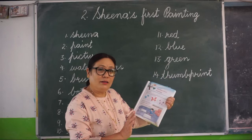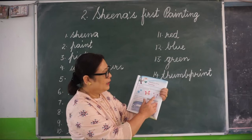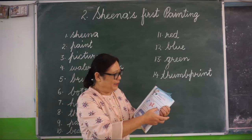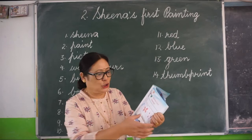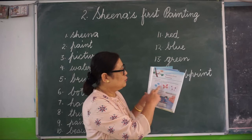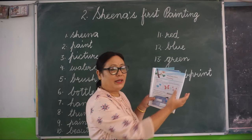Fish is there, and this is a butterfly. You can make your own picture in the empty box. That is your homework — using your thumb to make a thumb print. In page number 15, chapter 2, Sheena's first painting, there are three boxes. Two boxes already have examples, and in the empty box you have to make a thumb print. This is your homework.